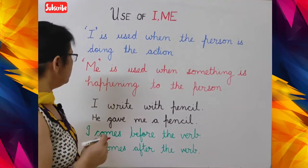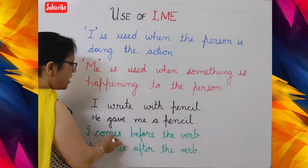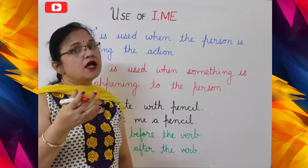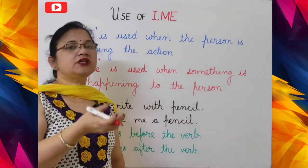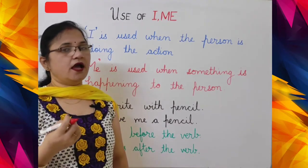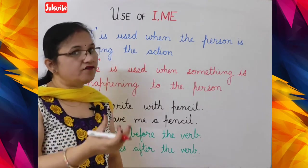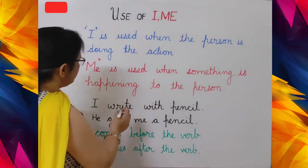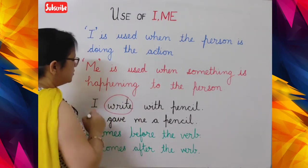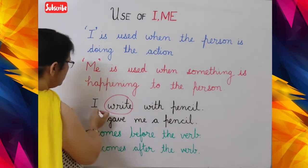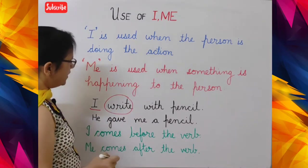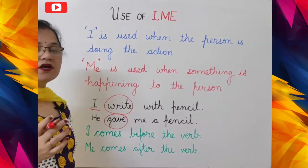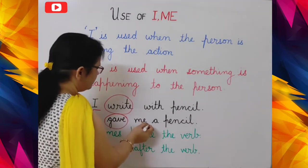Now one important thing to keep in mind: 'I' always comes before the verb — the action word. And 'me' is used after the action word. In the example 'I write', the verb is 'write', so I comes before it. In 'He gave me a pencil', the action word is 'gave', so 'me' comes after the action word.